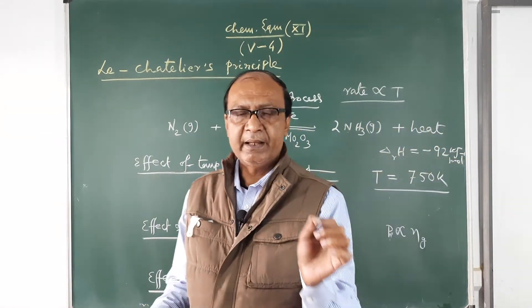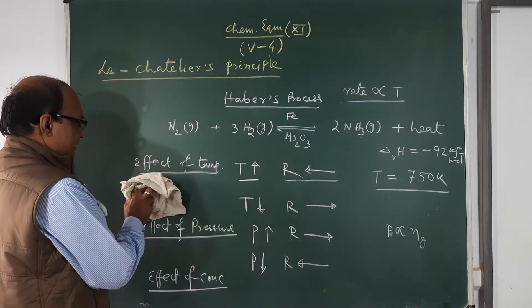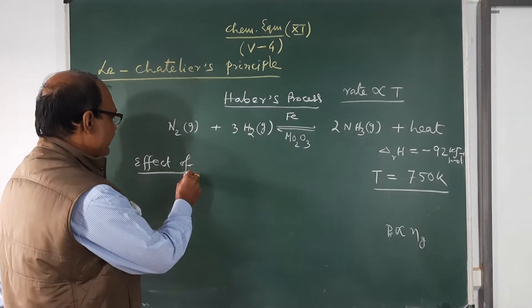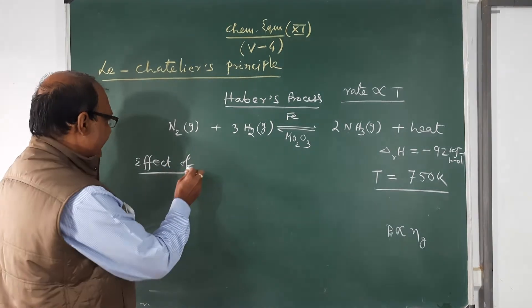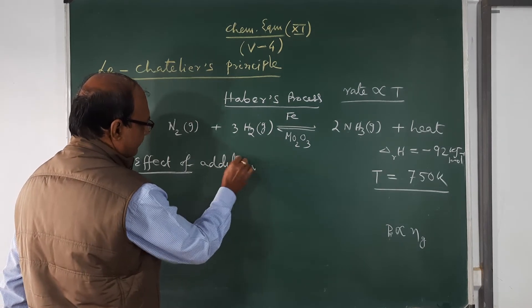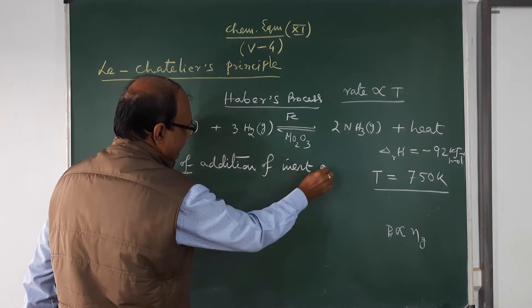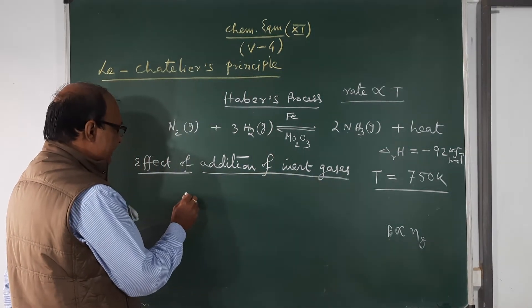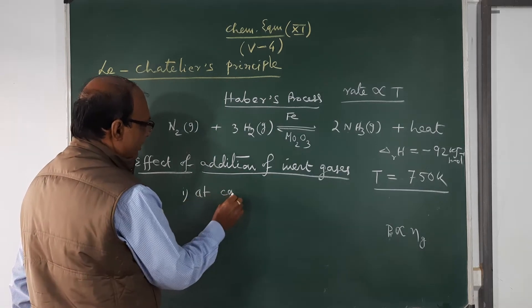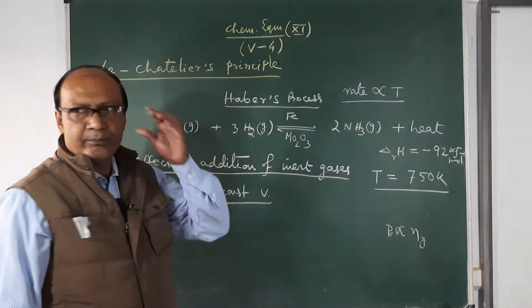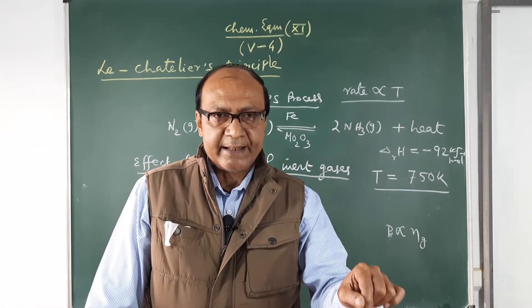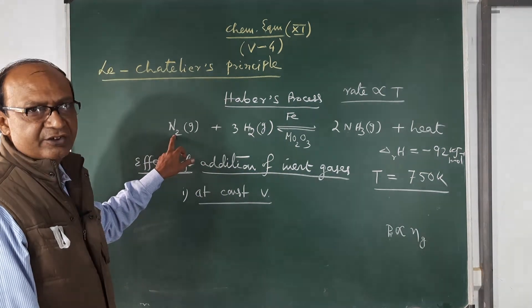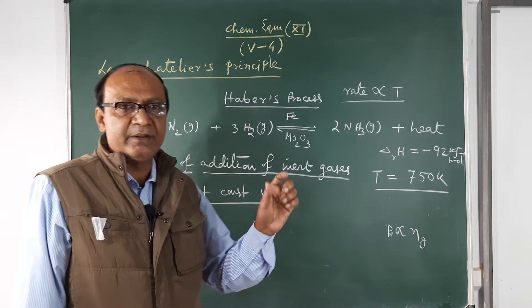Next is the effect of addition of inert gases, such as argon or neon. Case one: at constant volume. If inert gas is added at constant volume, the volume does not change. Since concentration equals moles per unit volume and volume remains the same, the concentrations of nitrogen, hydrogen, and ammonia do not change. Therefore, the equilibrium constant is not affected and the equilibrium position cannot be changed.